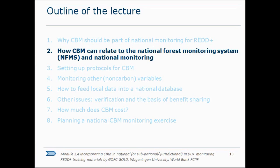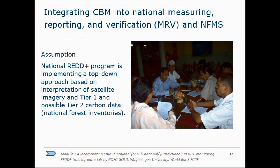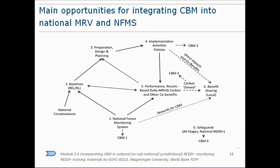Most countries have essentially tier one or at best tier two data. Community-based monitoring can feed more detailed data in at specific points and niches. It could be used to densify data in the national forest monitoring system for areas where communities are active, or where REDD projects are starting — communities could monitor before and after to get a sense of what change is occurring because of REDD.